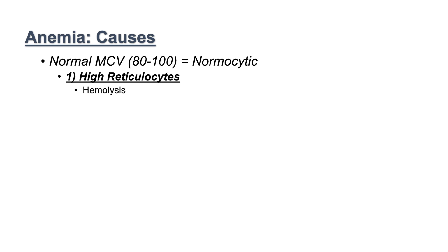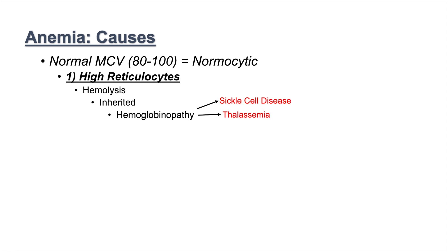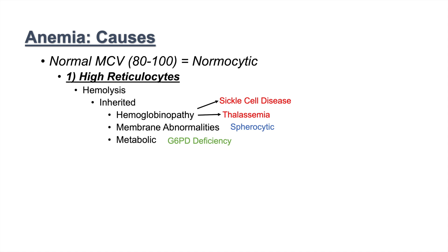One possible cause of high reticulocyte count in normocytic anemia is hemolysis. Hemolysis can be broken down into several categories. One is inherited — inherited hemoglobinopathies, which include sickle cell disease and thalassemia. Thalassemia can also be a normocytic anemia. There are also membrane abnormalities that are inherited, including hereditary spherocytosis, and metabolically inherited abnormalities such as G6-phosphate dehydrogenase deficiency.